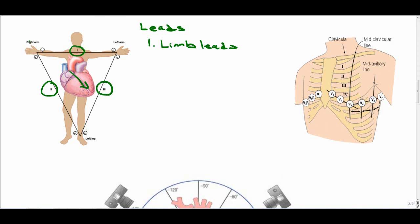The next set of leads that are limb leads are called AVR, AVL, and AVF. AV stands for Augmented Voltage. AVR is a lead that checks any voltage heading towards the right side of the patient. So it's positive towards the right and negative towards the left.